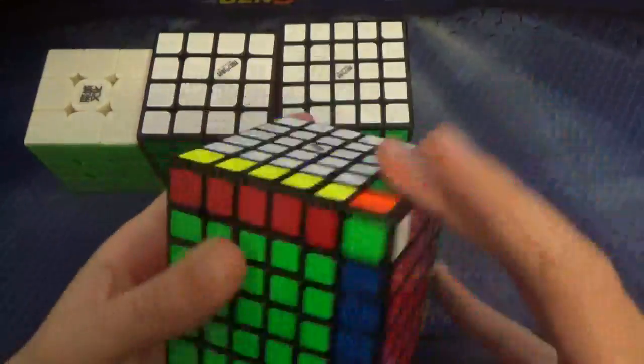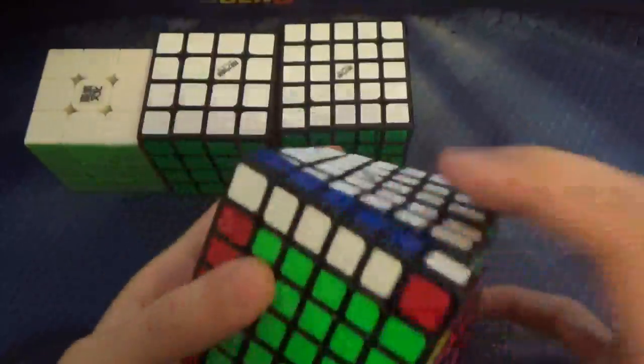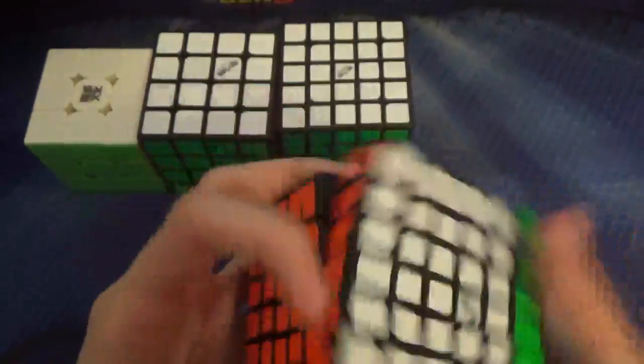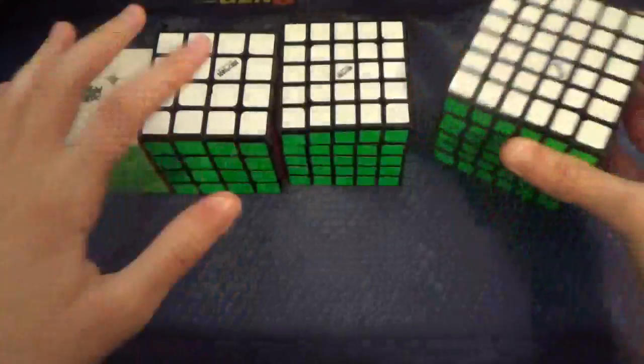The next event is 6x6. This is the QiYi Wuhua. My goal is just to get sub-3. Hopefully I'll do better, but yeah, I don't really care as long as I beat my PB. So, sub-3 average and sub-250 single.